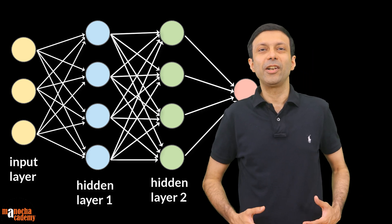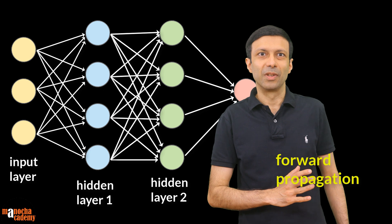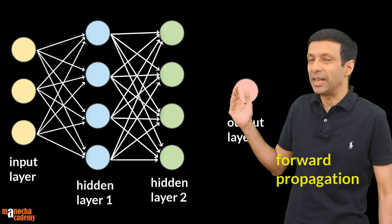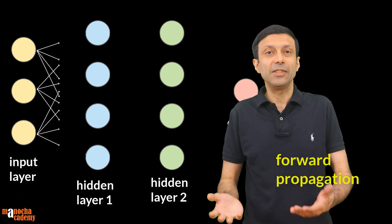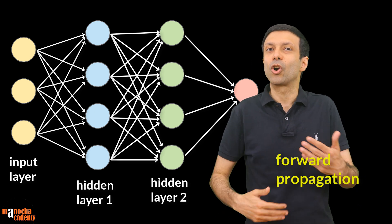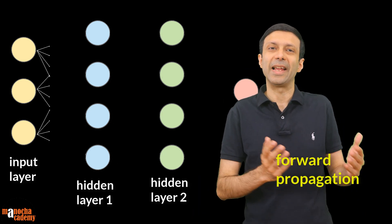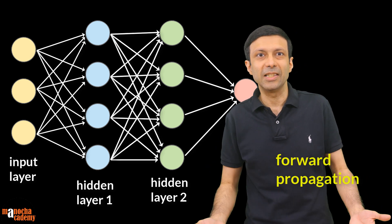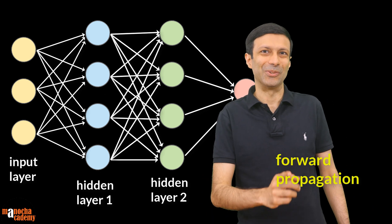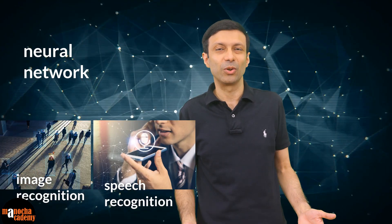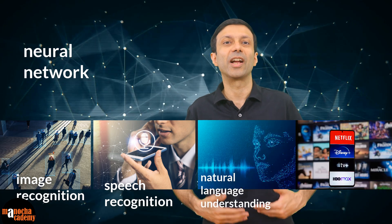Neural networks operate through a process called forward propagation, where data flows through the network from the input layer to the output layer. Each neuron in a layer receives the inputs from the previous layer, performs a computation, and passes the output to the next layer. We will look into more details on how the neural networks are trained and how they work in the next video. The ability of neural networks to learn and generalize from large amounts of data makes them powerful tools for tasks such as image and speech recognition, natural language understanding, and recommendation systems.